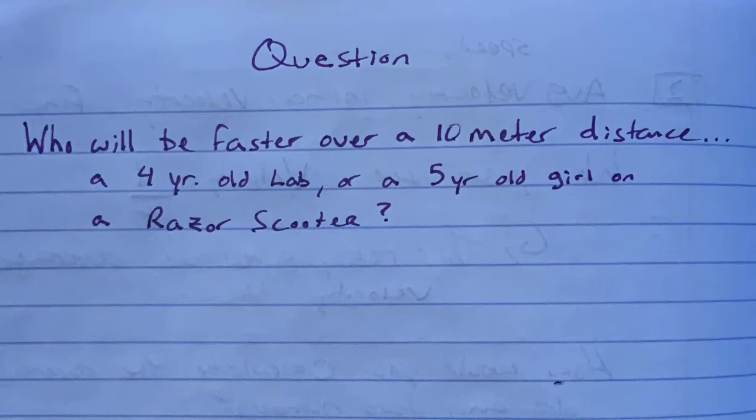The assignment asked me to compare the speed of two different test subjects. I chose my five-year-old daughter Maeve on her Razor scooter and my four-year-old black lab Murdoch just running.